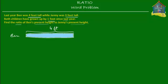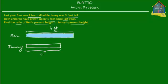And last year Jenny was three feet tall. So if this is four feet tall, three feet would be somewhere until here — smaller than four feet. So this is three feet and this is Jenny's height last year. Let's pour some color into this, say pink.